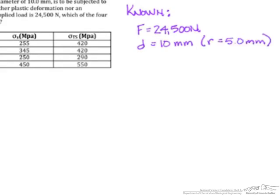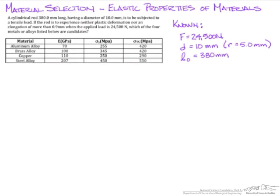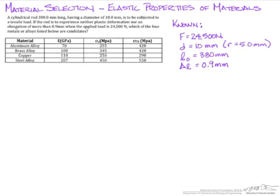We know the initial length is going to be 380 millimeters, and we know that our elongation, delta L, can be no more than 0.9 millimeters.